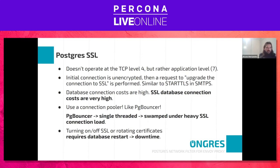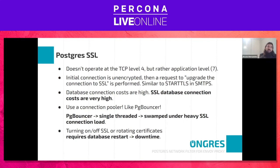SSL is desirable and required in many environments, but SSL database connections are expensive. On top of that, a common solution is to use a connection pooler like PgBouncer, but PgBouncer is single-threaded. Establishing SSL connections even via PgBouncer is expensive — you can actually bring down a PgBouncer with a not-that-high number of SSL connections and get swamped. Also, turning on SSL or rotating certificates in Postgres requires a database restart, which leads to downtime.